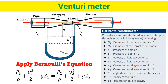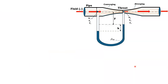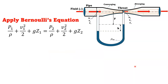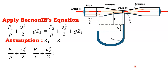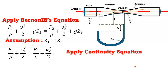Since this is a horizontal Venturimeter, Z1 equals Z2, which simplifies Bernoulli's equation to: P1/ρ + V1²/2 = P2/ρ + V2²/2.